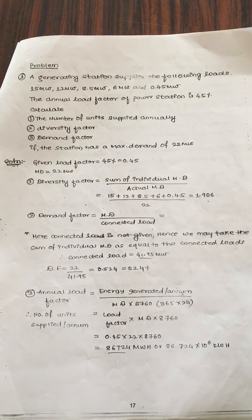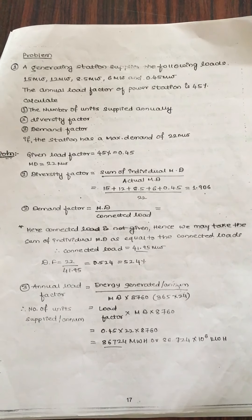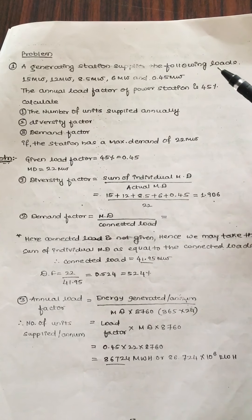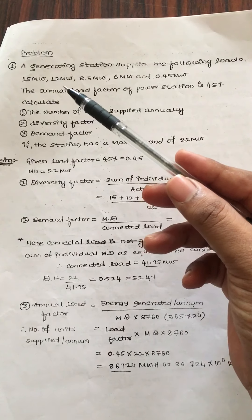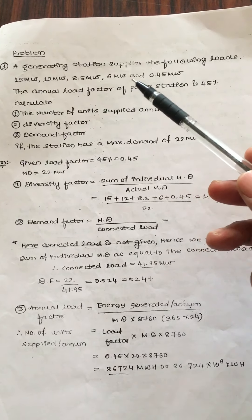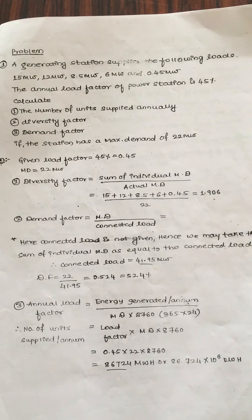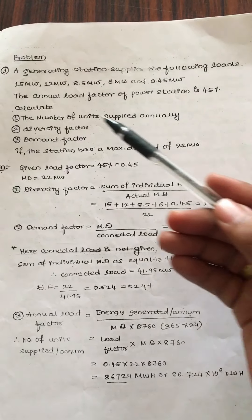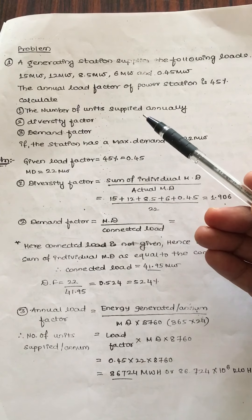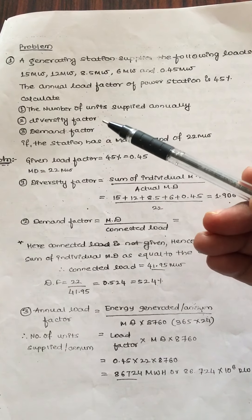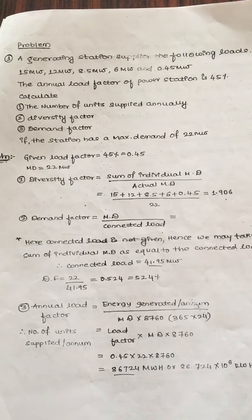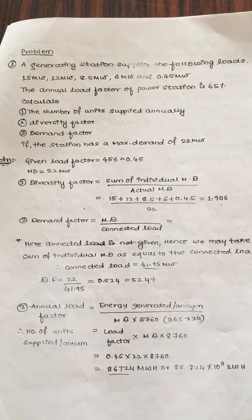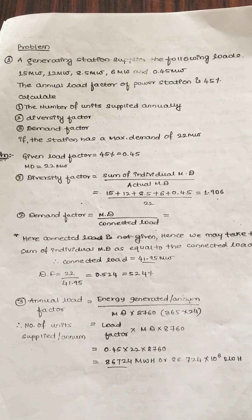Going to the next problem. A generating station supplies the following loads: 15 megawatt, 12 megawatt, 8.5 megawatt, 6 megawatt, and 0.45 megawatt. The annual load factor of the power station is 45 percent. Calculate the number of units supplied annually, the diversity factor, and the demand factor. The station has a maximum demand of 22 megawatt.